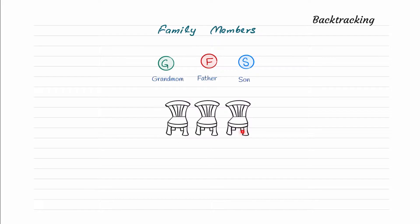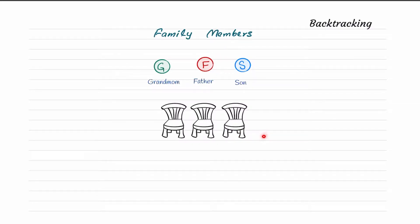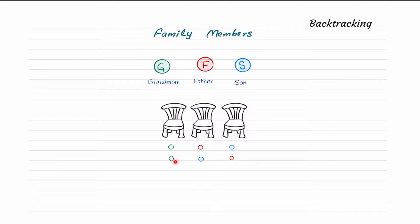We can find all possible sitting arrangements. Grandmom comes and sits on the first chair. For the second chair, father comes and sits. For the third chair, son sits. There could also be the possibility that on the second chair, son sits instead of father.